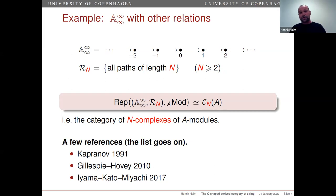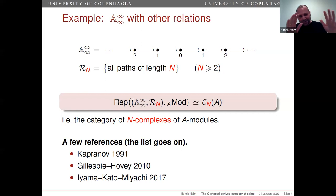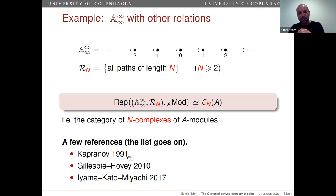It turns out that for this quiver there will be two interesting different model structures with the same weak equivalences, and therefore you have the same homotopy category — the derived category of n-complexes — which has been studied by other people. Quite a few people have studied n-complexes: they go back to Kapranov from 1991, and more recently n-complexes have been studied by Gillespie and Hovey, and also by Iyama, Kato, and Miyachi.